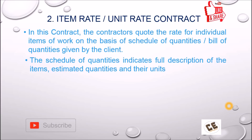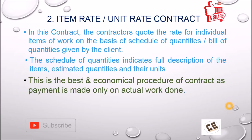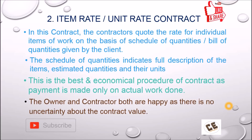The schedule of quantities provides full description of items, estimated quantities, and their units and specifications, so the contractor can fill in the rates with no chance of dispute. This is the best and most economical procedure of contract, as payment is made only for actual work done. Both the owner and contractor are happy as there is no uncertainty about the contract value.